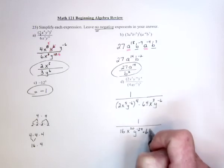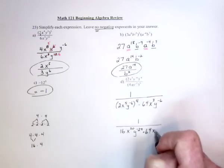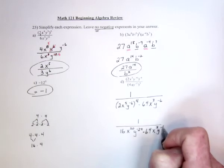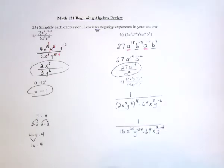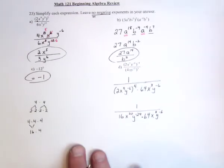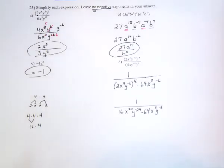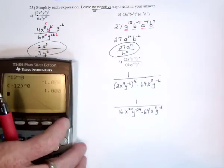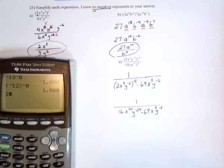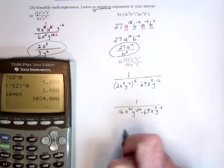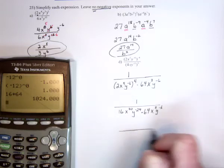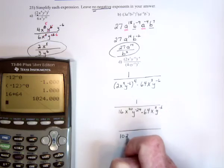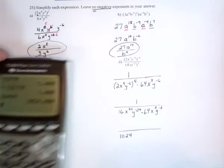And then, just recopy the 64, the x to the 3, and y to the negative 6. Alright. 16 times 64. 1,024.